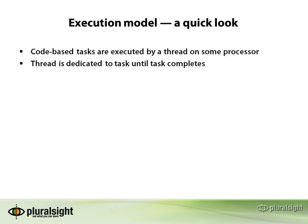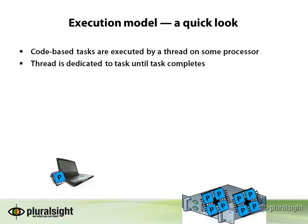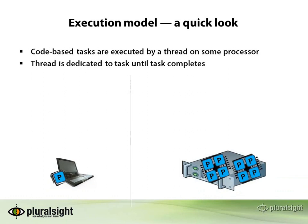Now let's take a look at this from two different perspectives. On the left, we have a machine, such as a laptop, with a single processing core. And on the right, we see a server blade that has, for example, eight processing cores.